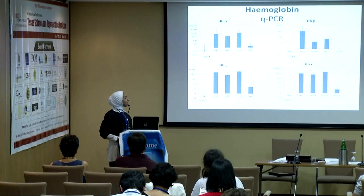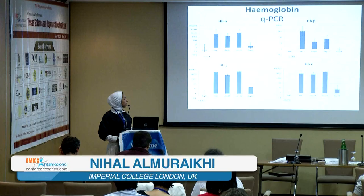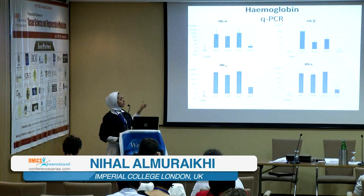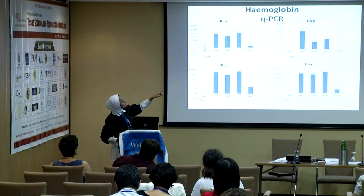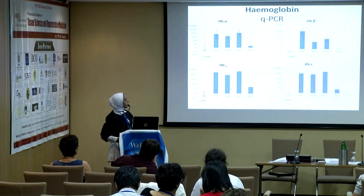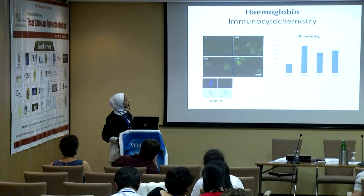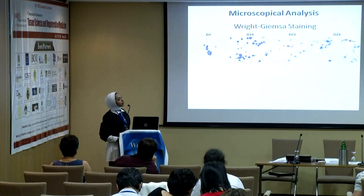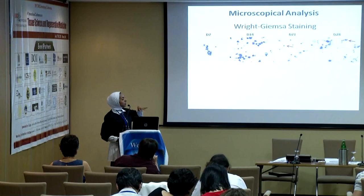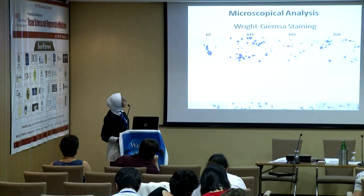Hemoglobin presence was confirmed with quantitative real-time PCR for alpha, beta, gamma, and epsilon globin. However, the majority of the hemoglobin present was of embryonic type, while some presence of beta globin — the adult hemoglobin type — was also observed. Hemoglobin intensity was confirmed with immunocytochemistry, and microscopical analysis showed enucleated red blood cells. By day 21 and day 28, approximately 10% of the whole population were already enucleated red blood cells, also confirmed with reticulocyte staining showing cells with the typical RNA mesh morphology of reticulocytes.